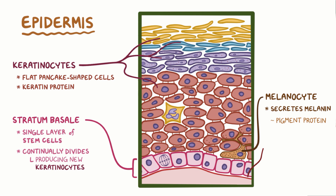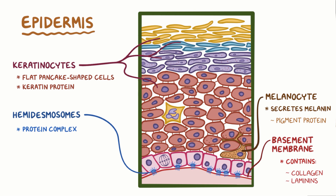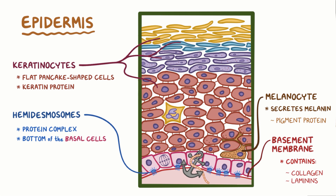Below the epidermis is the basement membrane, which is a thin layer of delicate tissue containing collagen, laminins, and other proteins. Basal cells are attached to the basement membrane by hemidesmosomes, a protein complex that stems from the bottom of the basal cells. Just like how an anchor digs into the sea floor and holds a boat in place, hemidesmosomes dig into the basement membrane and hold basal cells in place.